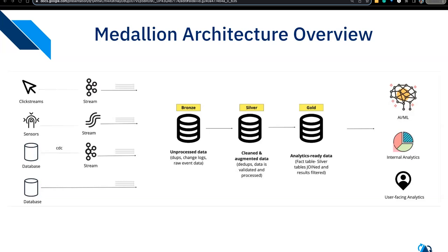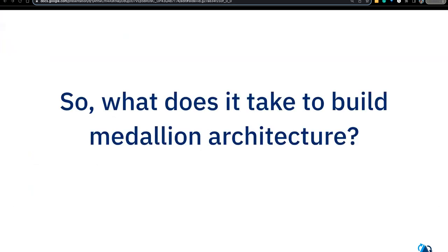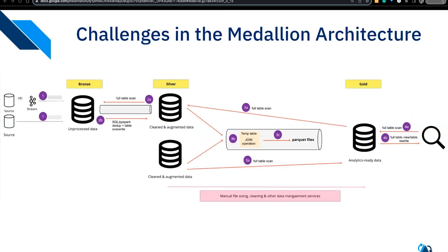From there, data graduates to a silver layer where you perform data deduplication, validate the data, orchestrate and manage the data — like data cleaning, file sizing, and more. Finally, you'll write join queries across the different silver tables you've created, producing a fact or gold table that can be used by AI/ML applications, downstream analytics, and more.